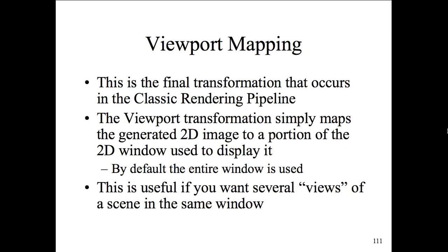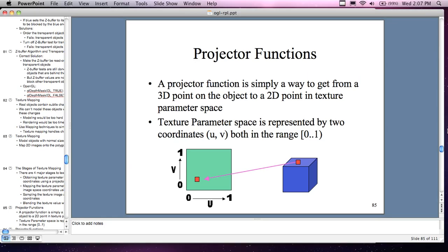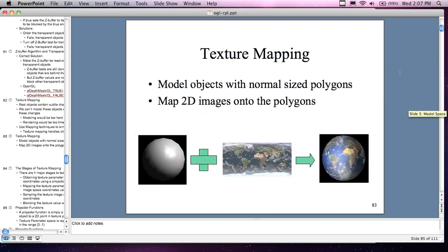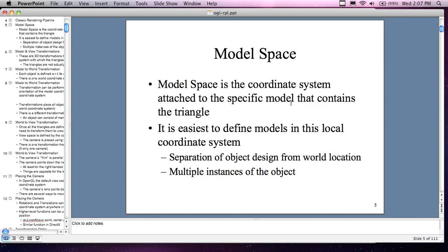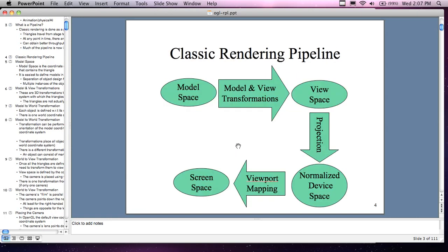Viewport mapping is the final transformation in the classical rendering pipeline. It simply maps the generated 2D image to the portion of the screen window used to display it. By default the entire window is used, unless a subsection is blocked off. It's useful if you want several different views in the same window using different viewport settings. To put everything in perspective: what I've covered over the last two weeks is this entire pipeline. The viewport mapping gives us the final 2D image in screen space, and texturizing falls into the normalization process.